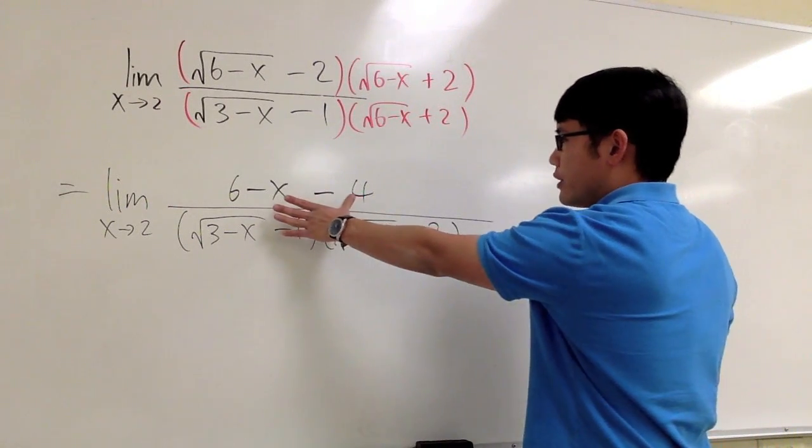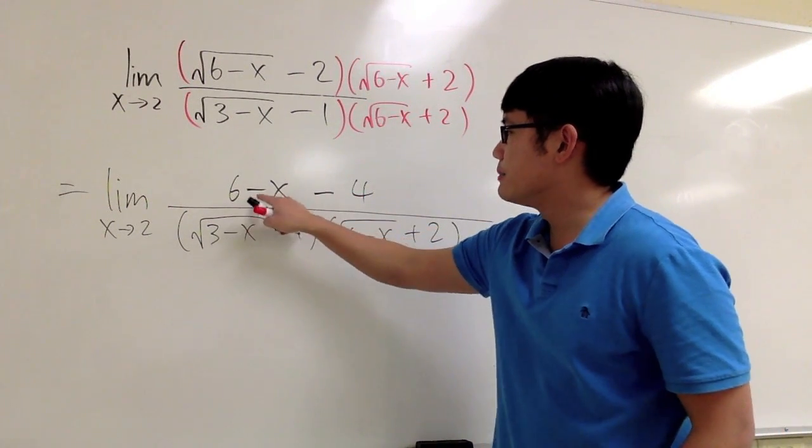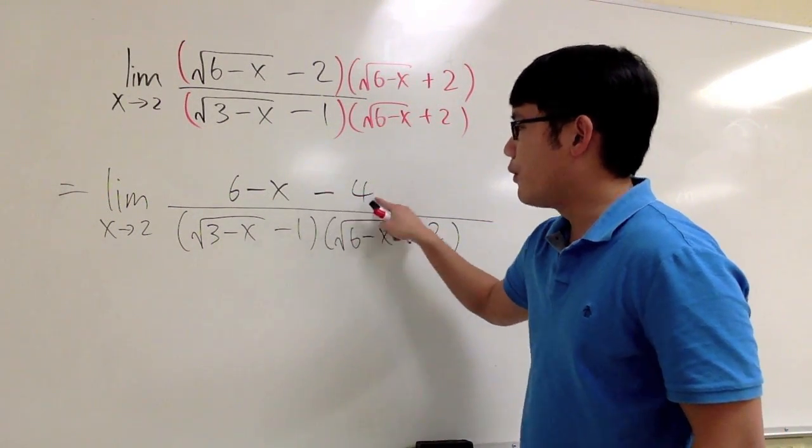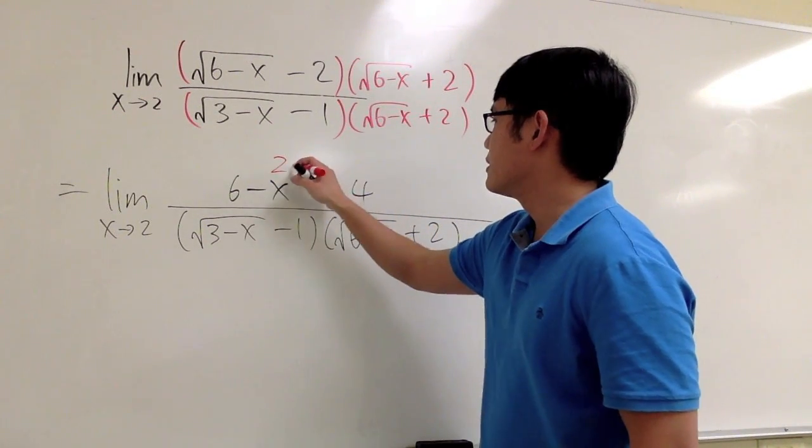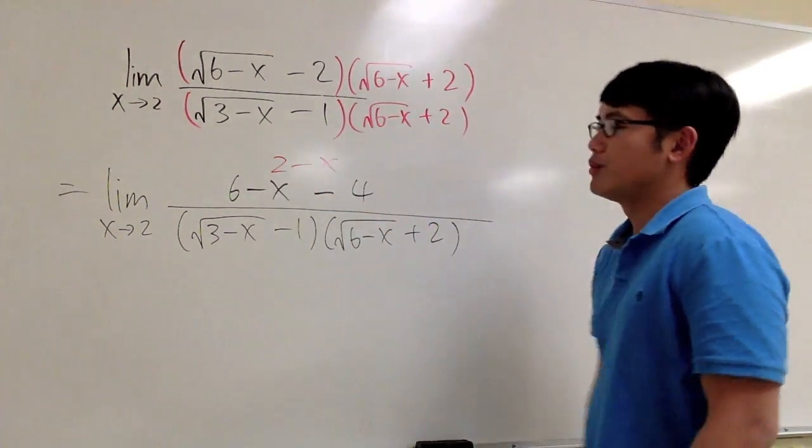And let's take a look at the numerator. We have 6 minus x minus 4. 6 minus 4 is equal to 2. We can subtract that. In another word, we have 2 minus x.